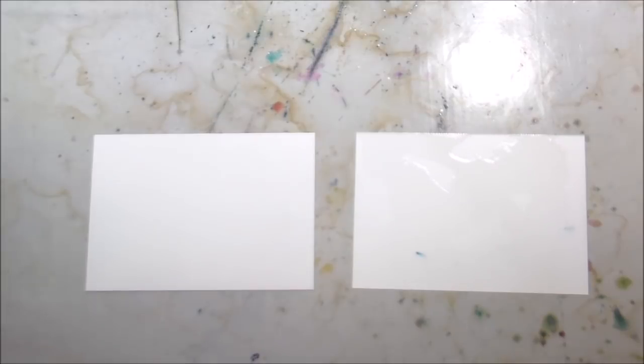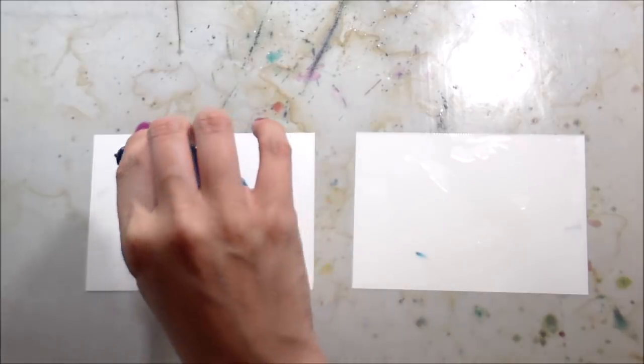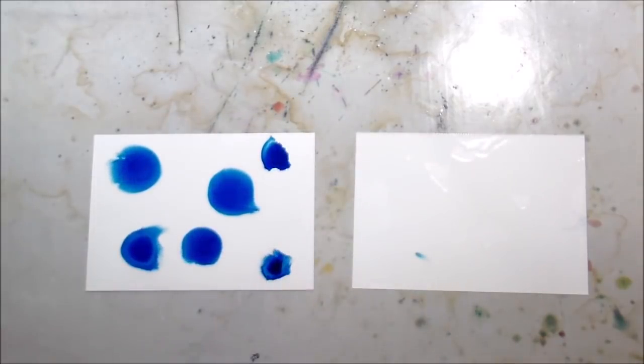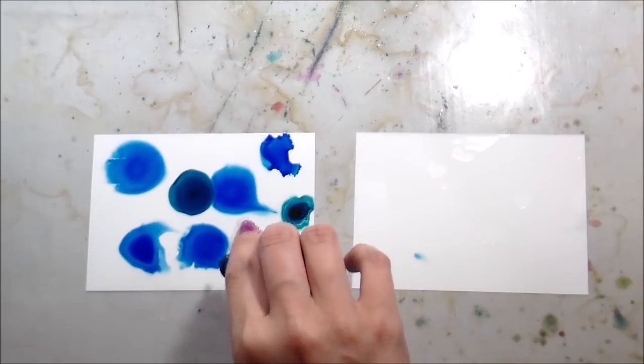So the one on the left is going to be the actual alcohol ink from Ranger. The one on the right is going to be the Copic refills. So here you can see I put down the mixative on the paper. This is just one sheet by the way that I cut in half because I'm all about stretching those supplies.